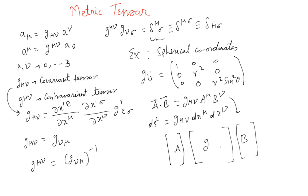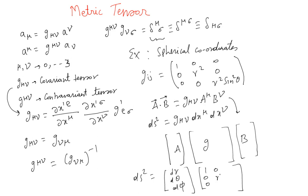For spherical coordinates, dS² is written using the row vector (dR, dtheta, dphi), the metric matrix G = diag(1, R², R²), and the column vector. Using the A, G, B matrix representation, we are able to write dS². For this case, the basis vectors are orthogonal, which makes this identity easier to prove. However, this holds true even when the coordinate system is curvilinear or the basis vectors are not orthogonal.